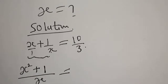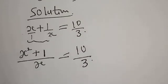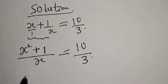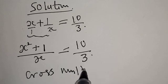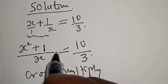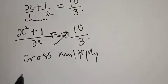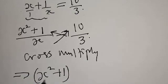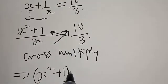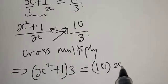So we have (x squared plus 1) over x is equal to 10 over 3. The next step is to cross multiply — this multiplied by this and this multiplied by this. This implies that 3 times (x squared plus 1) is equal to 10 times x.